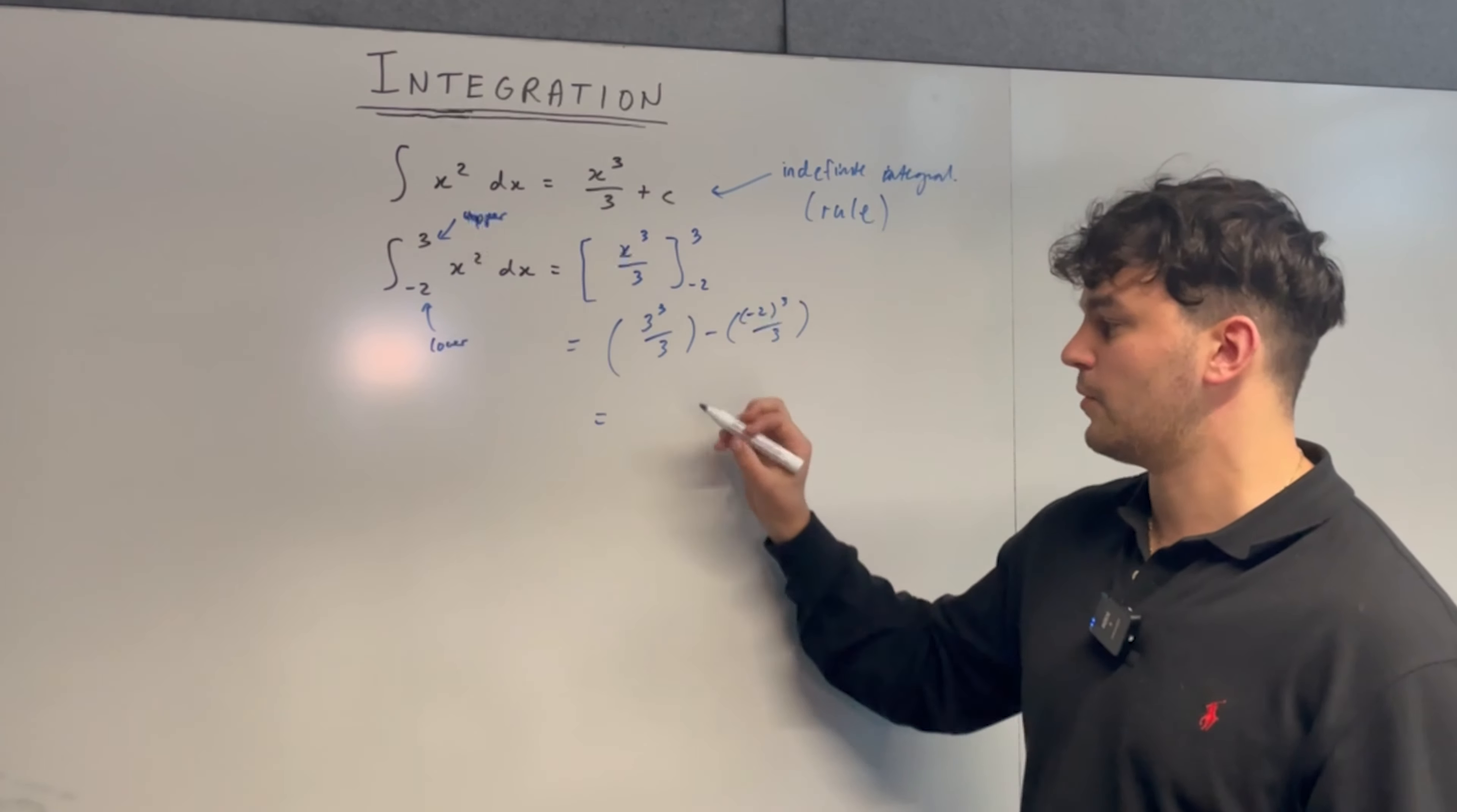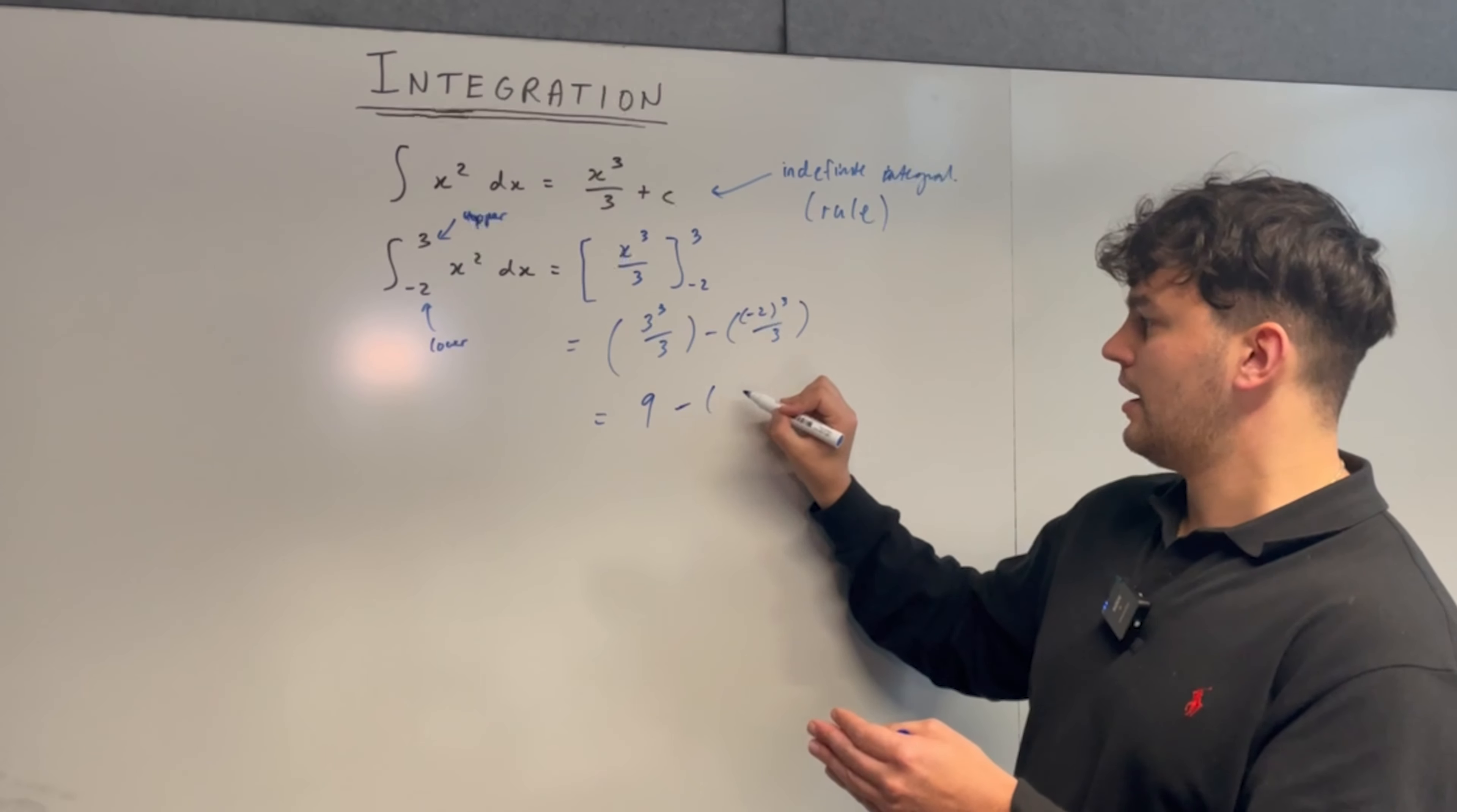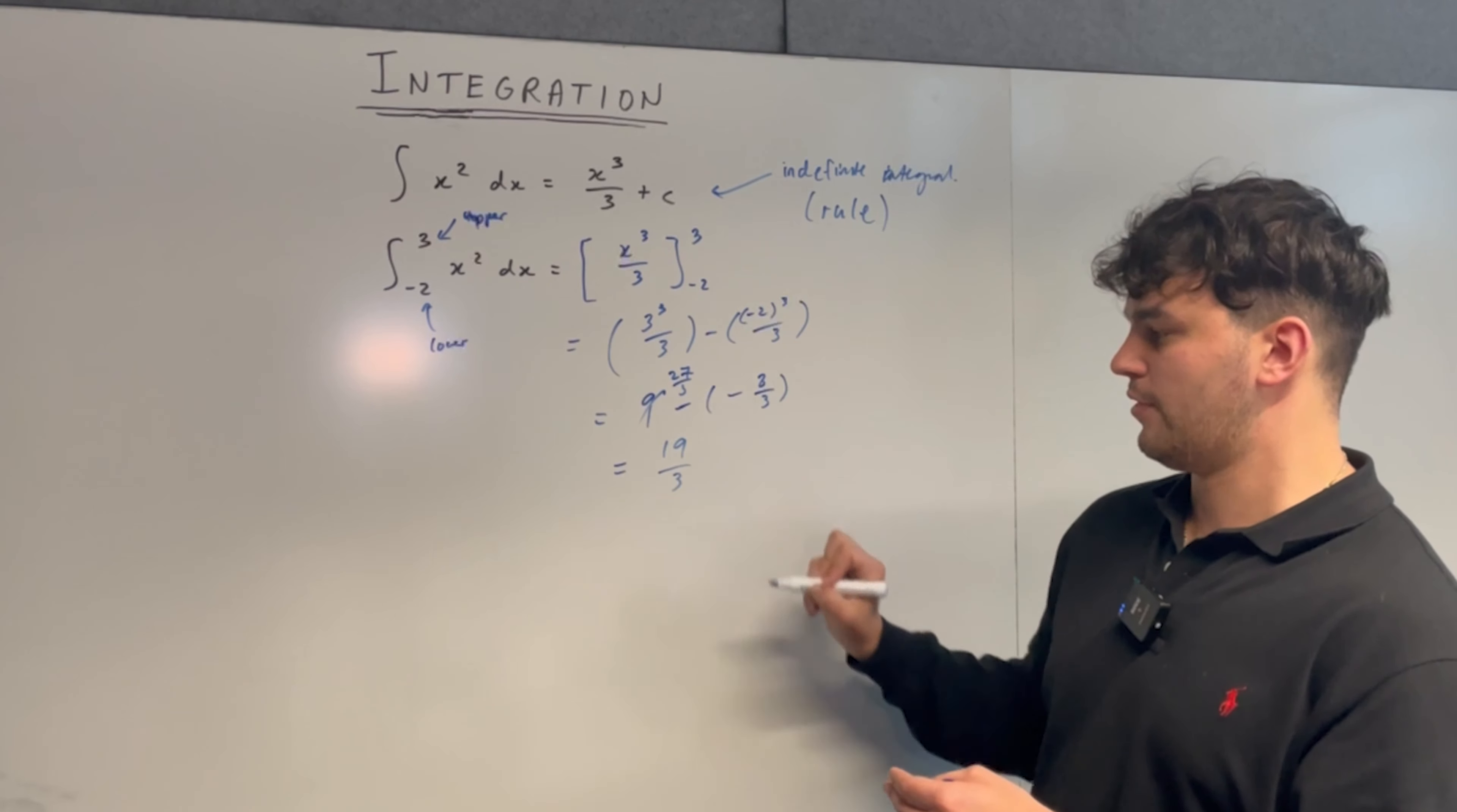Three cubed is 27 divided by three is nine. Negative two cubed becomes negative eight because it's negative to a power of an odd number, so multiplying a negative number three times keeps it negative. So it becomes minus negative eight divided by three. Now I can combine these terms together: nine becomes 27 over three, so 27 minus eight is 19 over three.